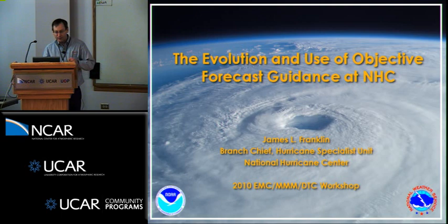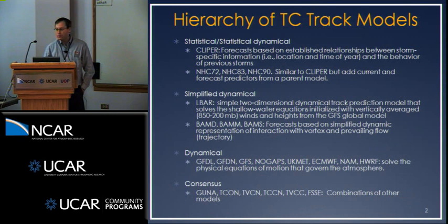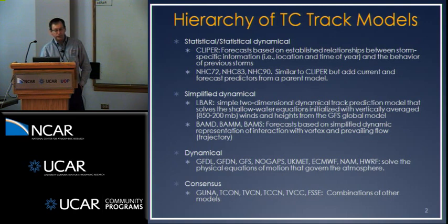We're definitely going to change gears here from the last three talks. Naomi asked me to give a little bit of a historical perspective on the use of models at NHC, kind of where we are now in terms of the verification. We'll talk briefly about the hierarchy of tropical cyclone track models used operationally at NHC, starting with the statistical models. The simplest model is the CLIPER — climatology and persistence — which tells you what is normal in any given situation and doesn't know anything about what's going on in the atmosphere right now.